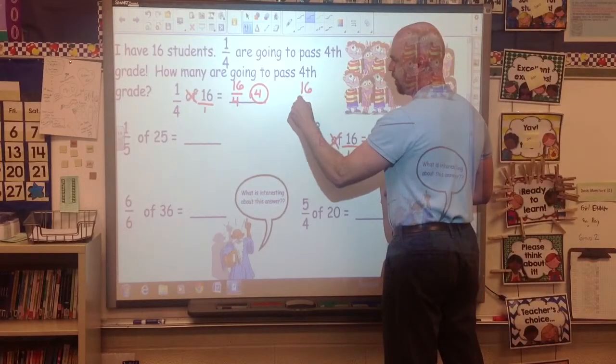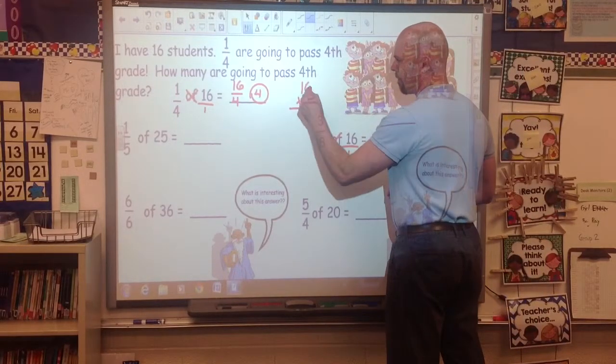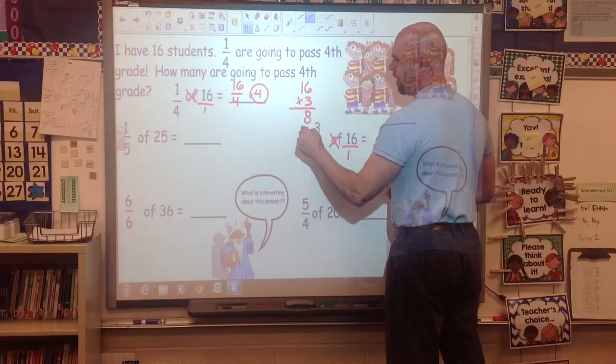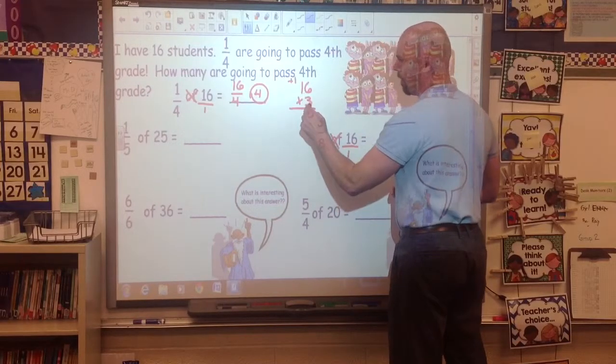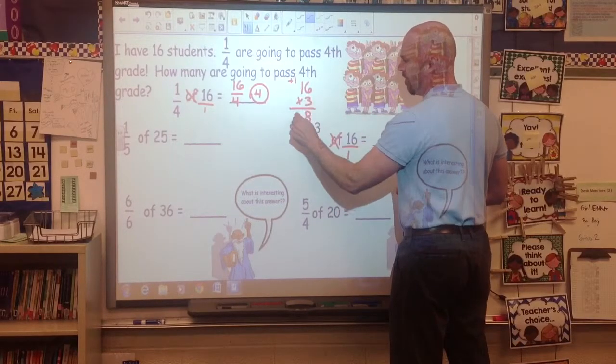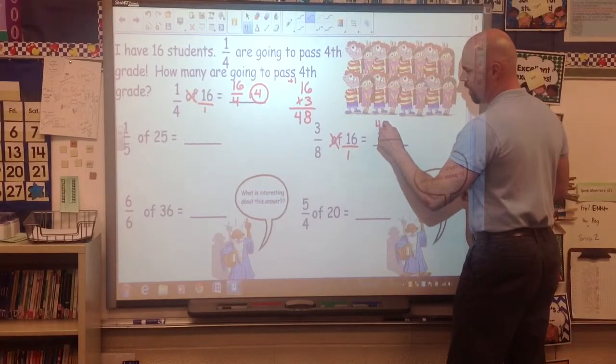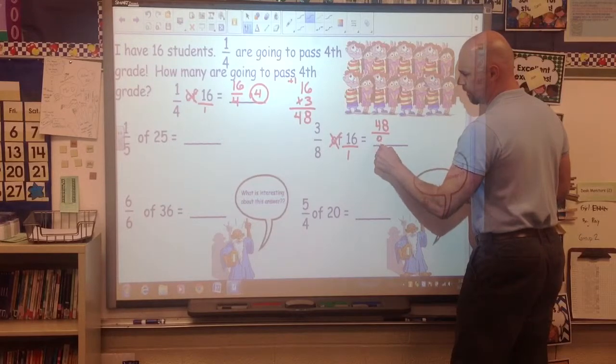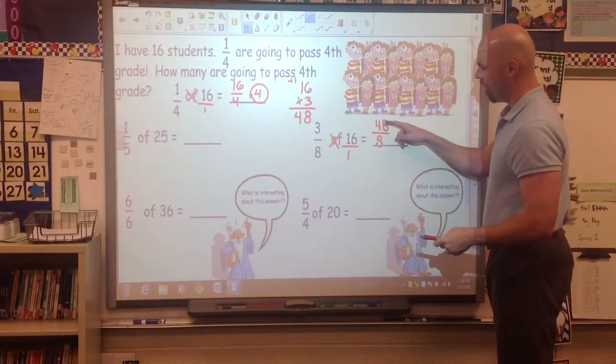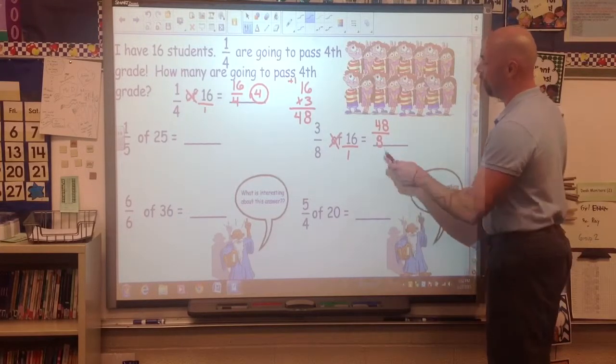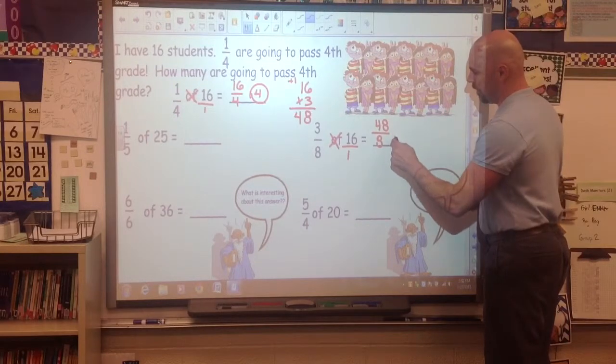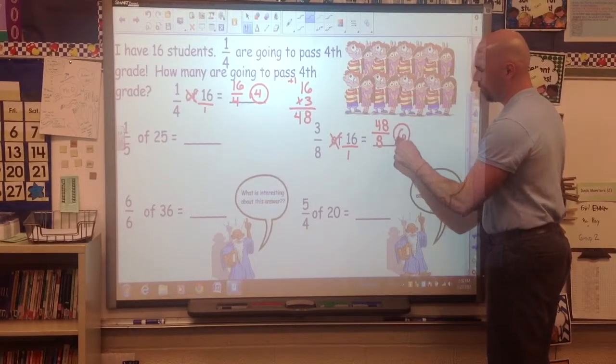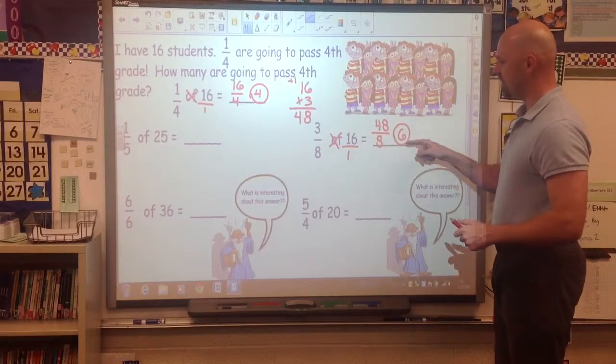So, we have to actually work that one out. 16 times 3. 8 down, carry the plus 1. 3 times 1 is 3. Plus 1 is 4. So, our top of our fraction is 48. 8 times 1 is 8. And there's our division problem. 48 divided by 8 is going to be 6. 3 eighths of 16 is 6.